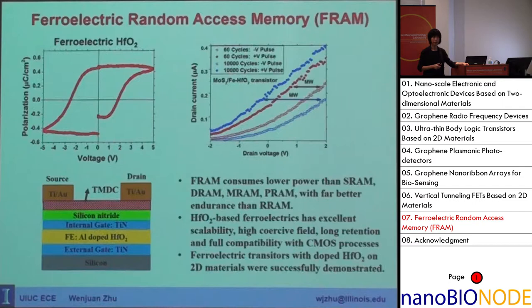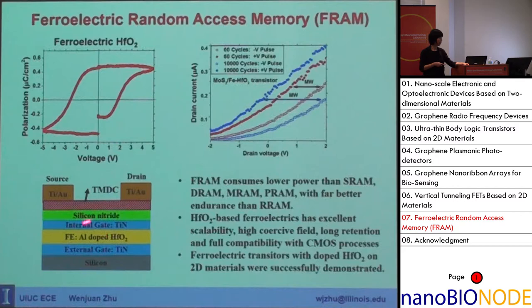Recently, people demonstrated 2.5 nanometer zirconium-doped hafnium oxide with decent ferroelectricity. Additionally, this material is fully compatible with CMOS — Intel, IBM, TI, and TSMC are already using hafnium oxide as gate dielectric. The only change needed is to introduce doping, such as aluminum-doped hafnium oxide, which is already acceptable in CMOS production.